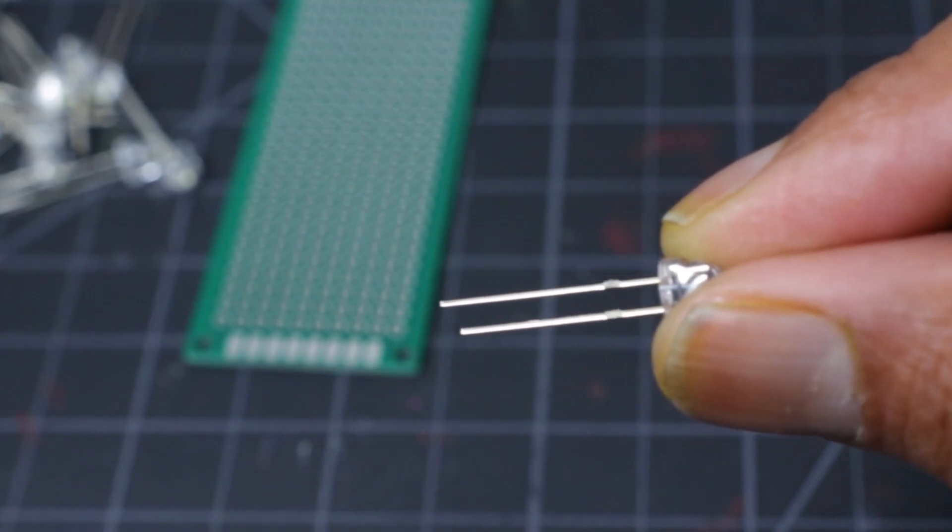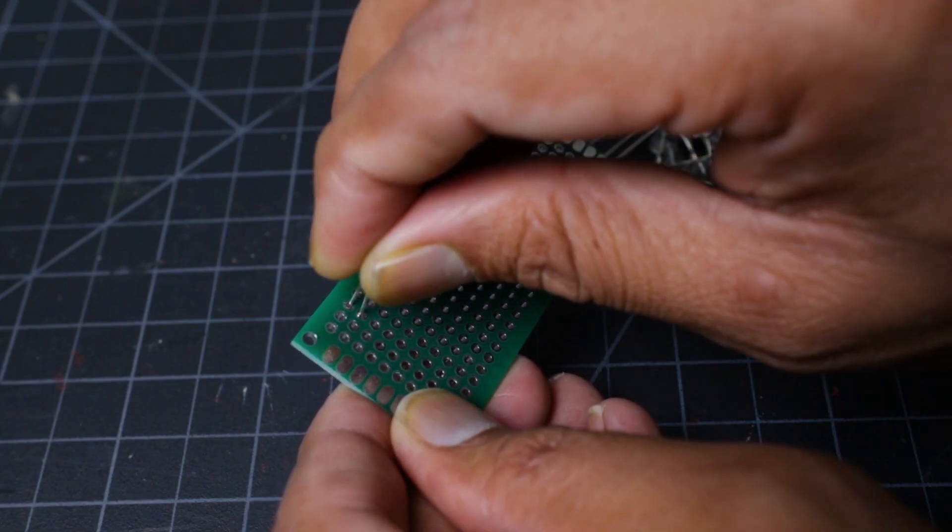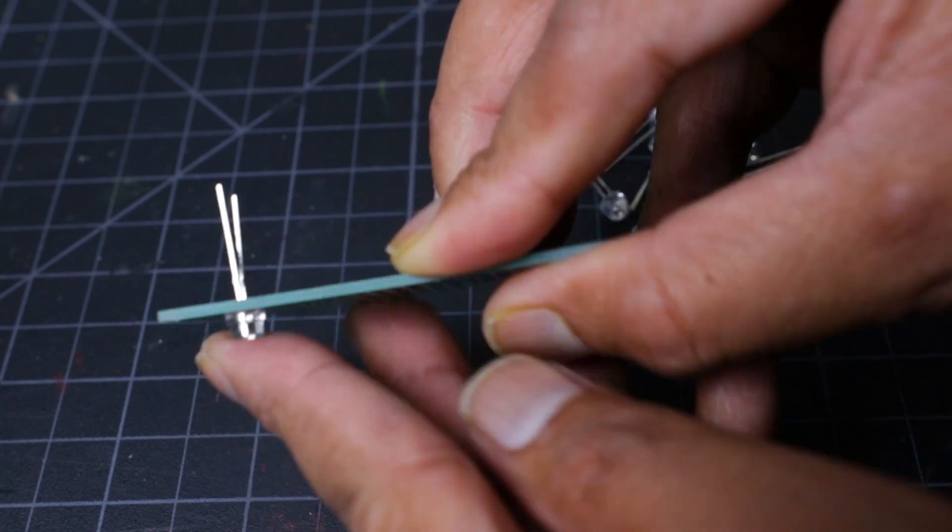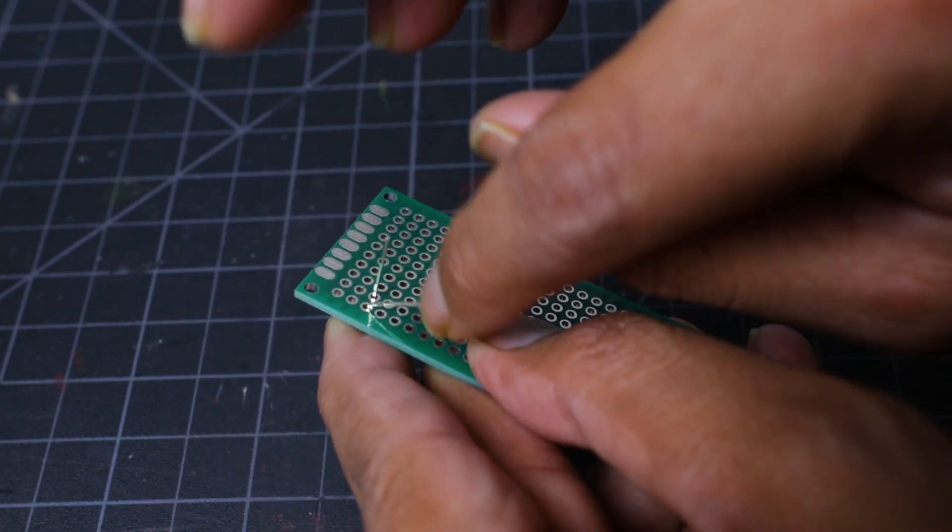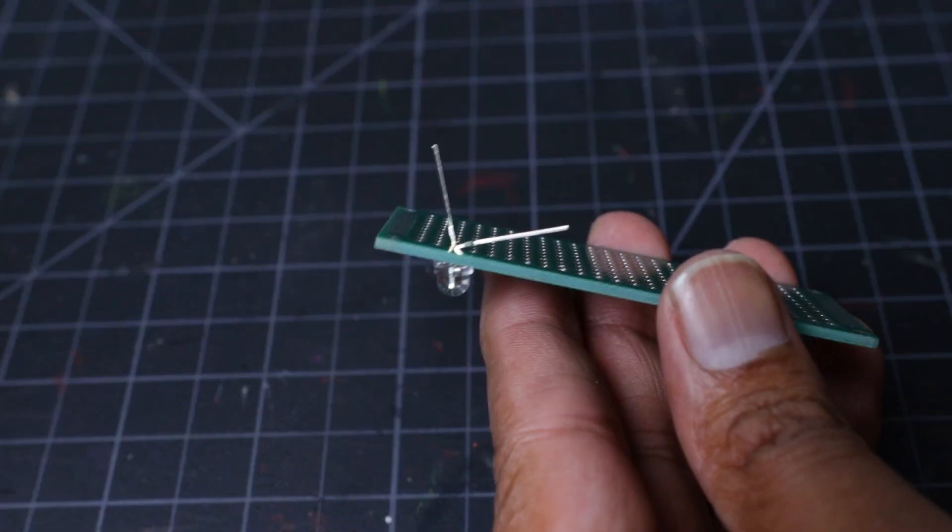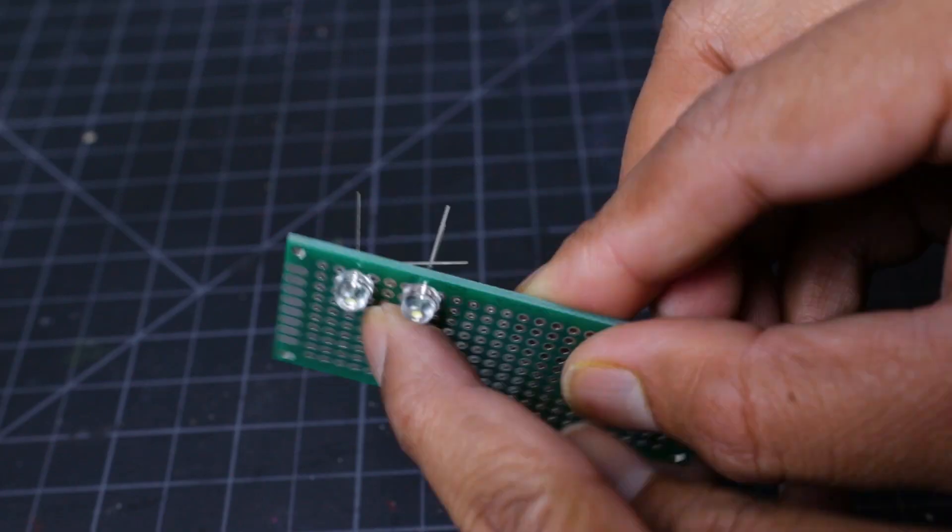The long leg of the LED is positive. First, I inserted the LED into the prototype board. Then bend the positive leg at right angle. Repeat the same procedure for all the LEDs.